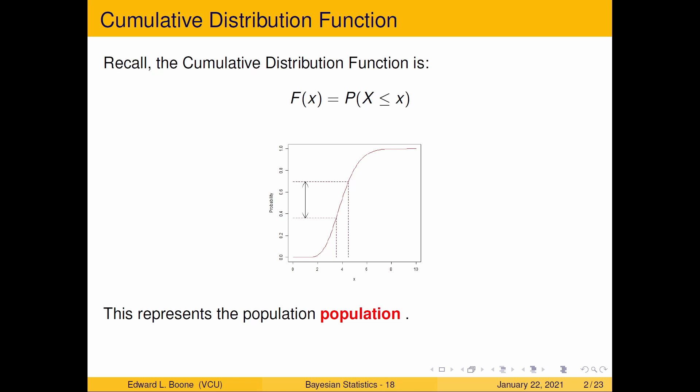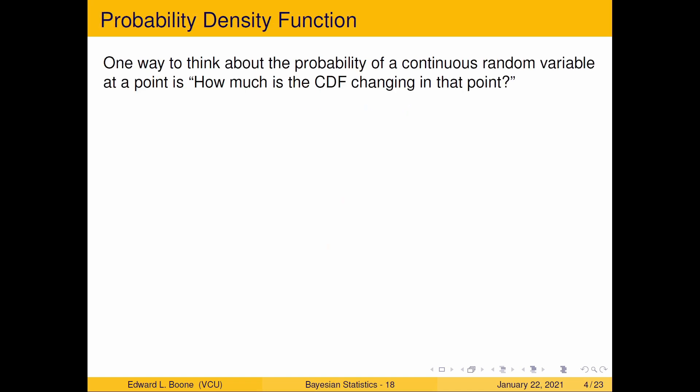Remember, continuous random variables are difficult to deal with, so we decide to change the way we look at things in terms of a cumulative distribution instead of looking at individual values directly. And this red line here is going to represent the population. So how can we think about one value, though? Because often we want to think about individual values, not ranges of values. One way to think about the probability of a continuous random variable at a point is, how much is the CDF changing at that point? And once you understand how the CDF is changing, you can start thinking about things in terms of likelihood.